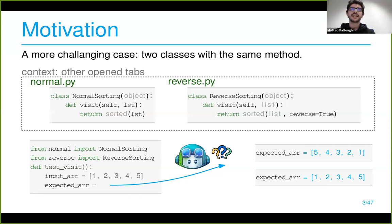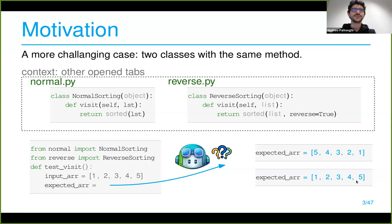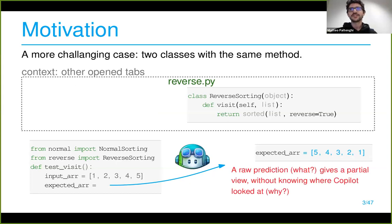If we only have one tab open, the model will likely give us the correct one — I've tried this myself. But when both are open, we don't know. When we have many tabs with intricate relationships in our codebase and get some prediction, we might wonder why. We'd like to understand how to better direct the model to generate code for us, especially for complex cases we can't write easily ourselves.